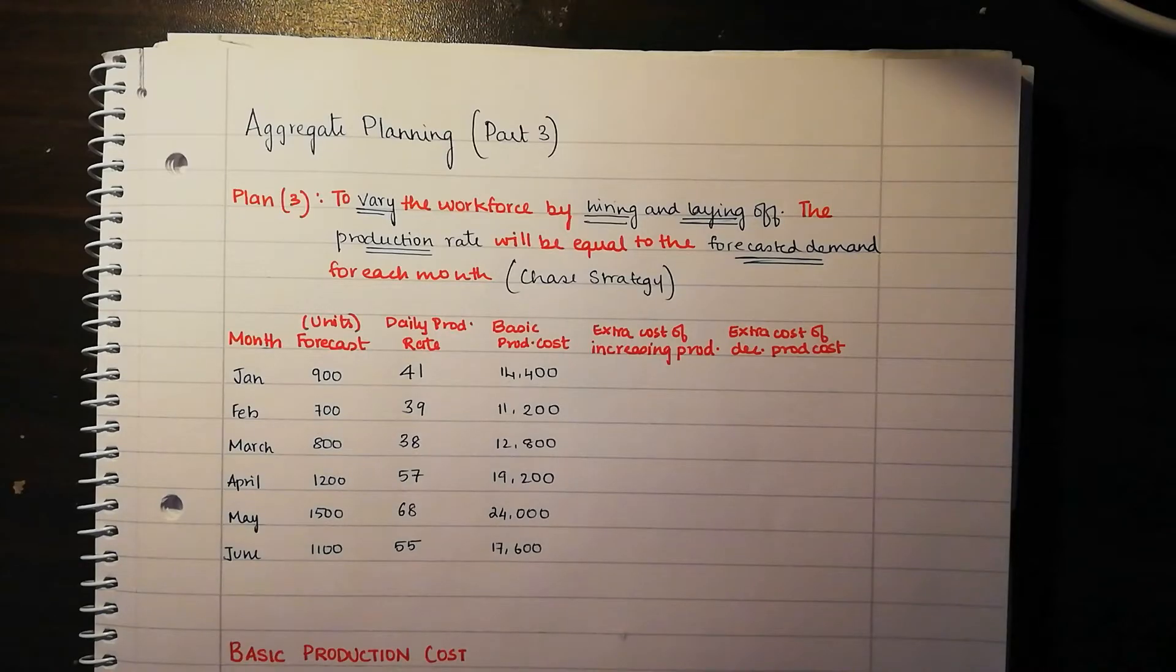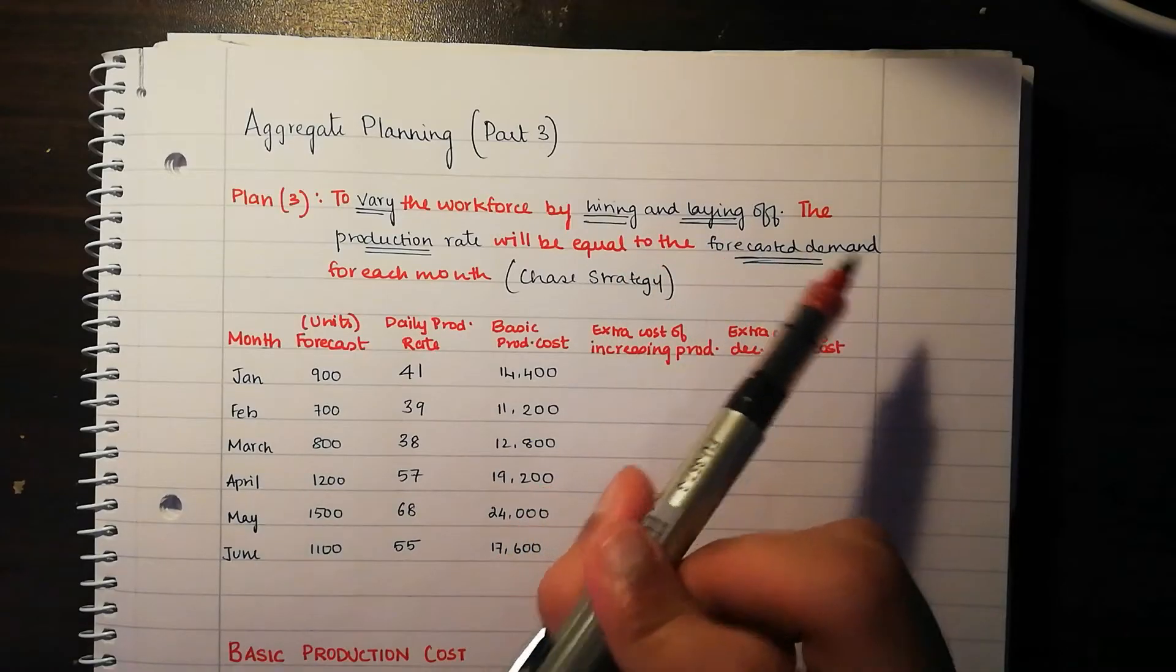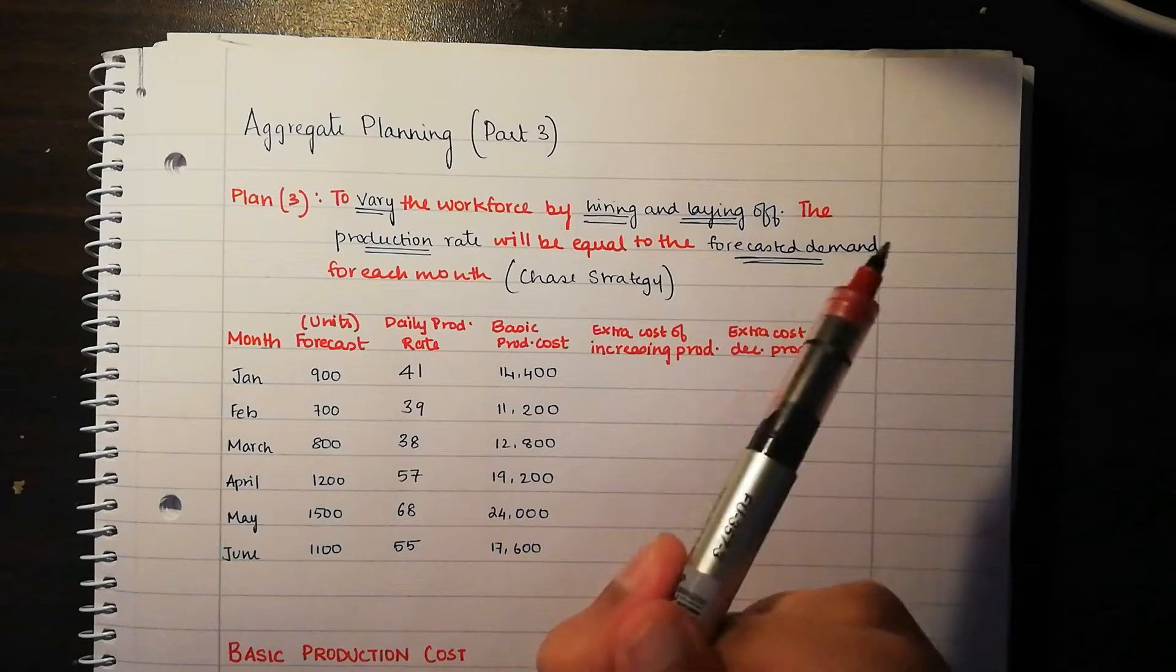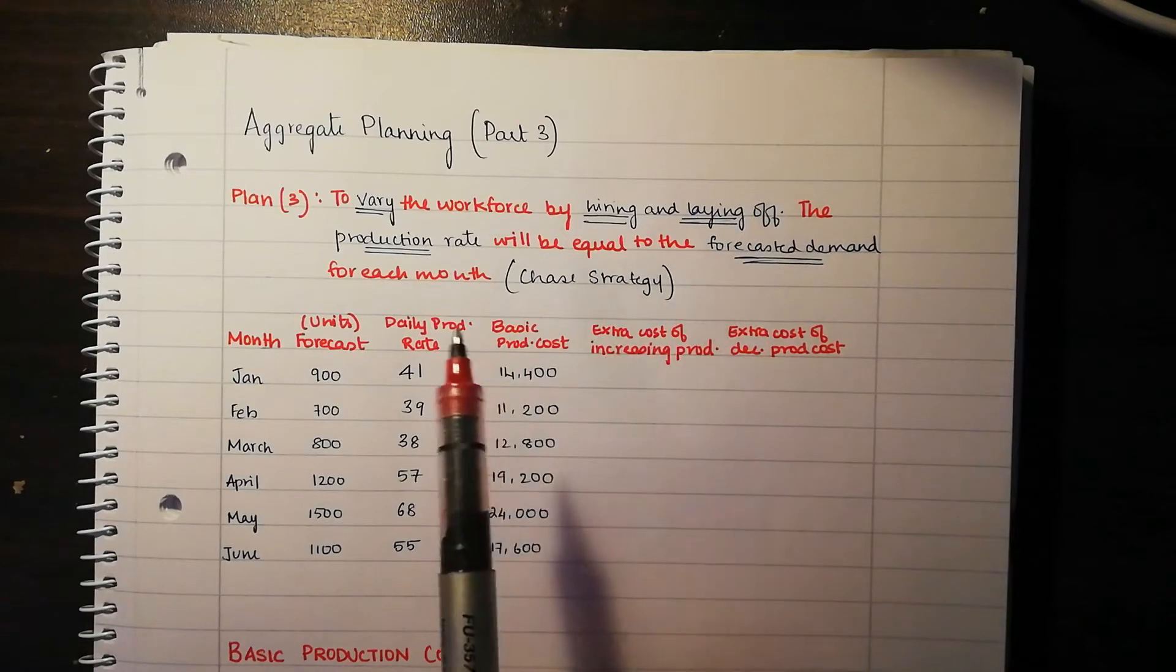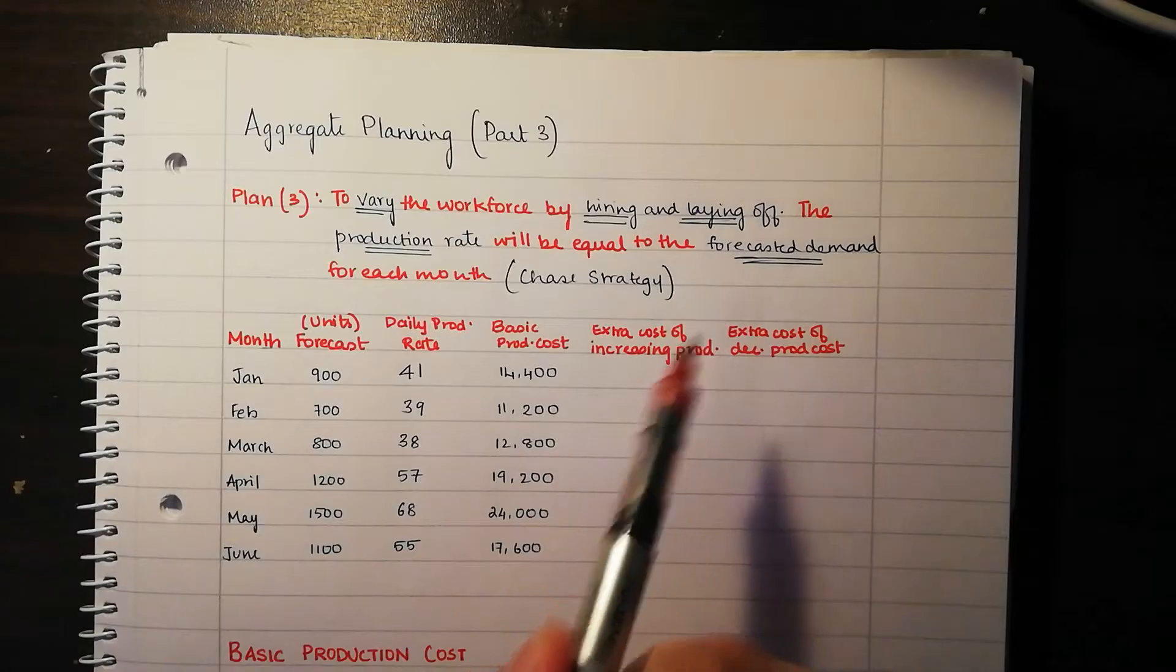You can see my other two videos which explain plan 1 and plan 2. In this final video we will be looking at plan 3. Plan 3 basically observes to vary the workforce by hiring and laying off workers and the production rate will be equal to the forecasted demand for each month. This statement indicates it's using a chase strategy which is different from a level strategy.